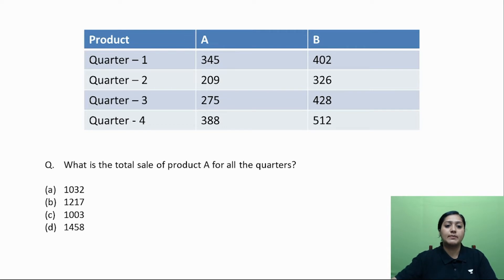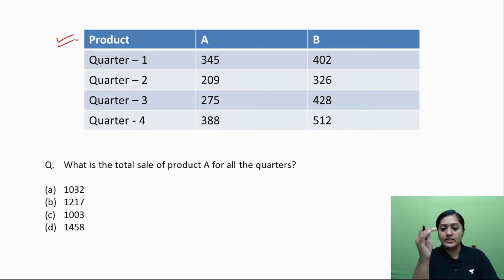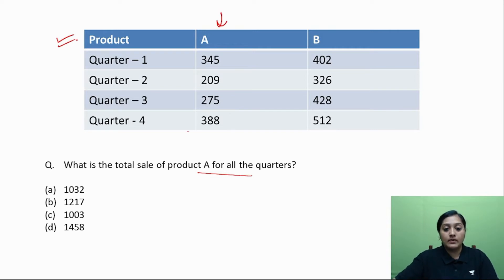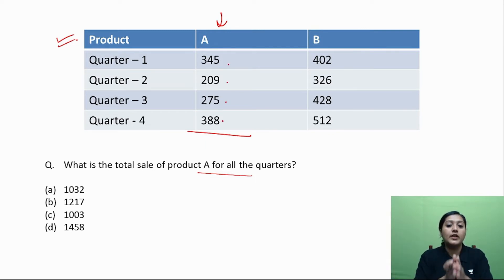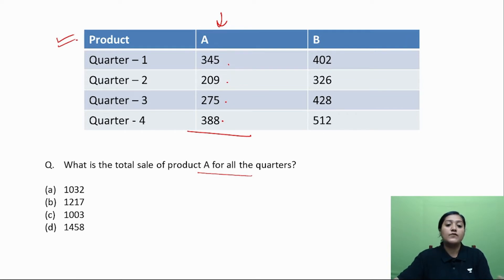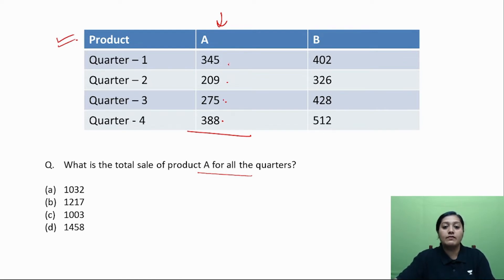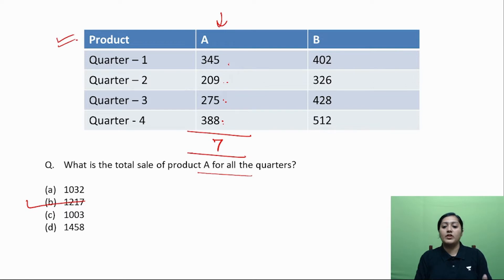Now let me talk about unit digits. I have prepared a table — suppose there are two products A and B, and their sale is shown across quarters 1, 2, 3, and 4. The question asks: what is the total sale of product A for all quarters? Instead of adding the complete numbers, just add the unit digits. If the unit digits are the same, calculate the addition of the last two digits. For example, adding gives 5 and 5 = 10, then 9 and 8 = 17; so the last digit is 7 — option B. That's it.